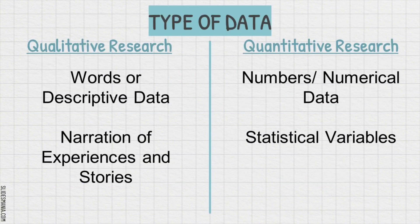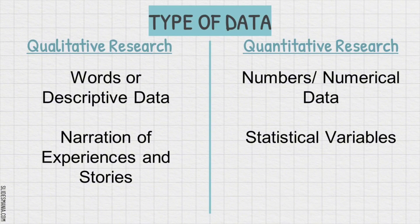Type of data. In qualitative research, it collects words or descriptive data. It anchors narration of experiences and stories. The type of data collected from participants should be in the form of narratives of experiences or stories, or what we call observable descriptions. Documents, photos, and images may also be used. With that, this research is more on writing and reading and less on computations — it is more on words.